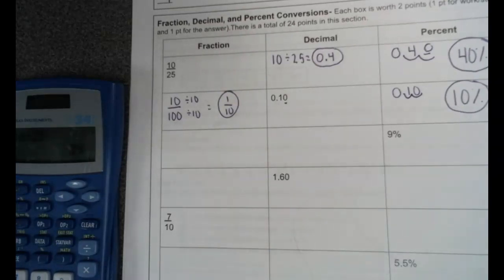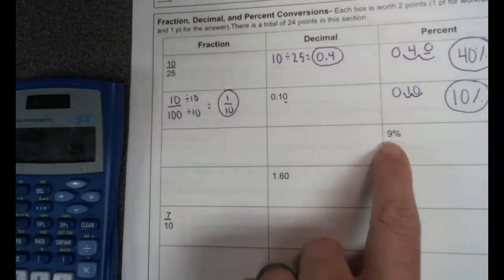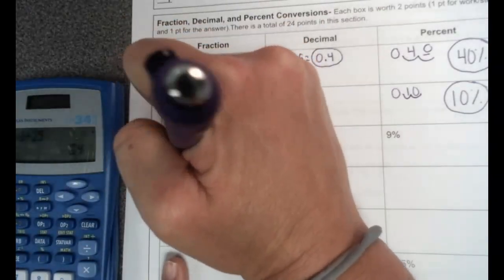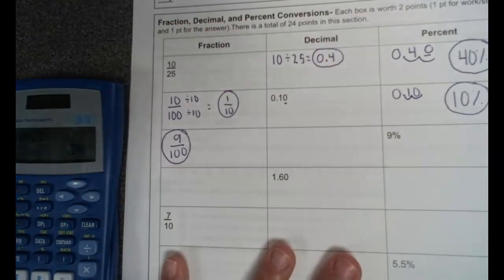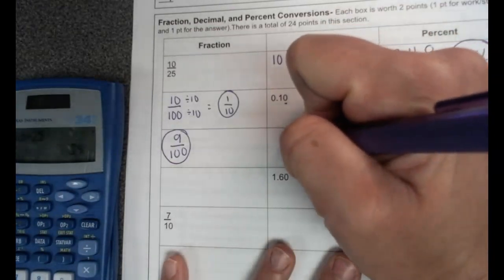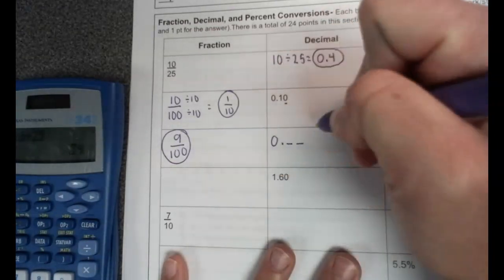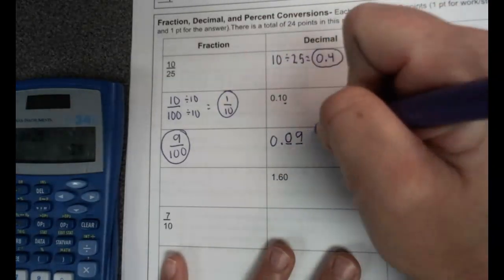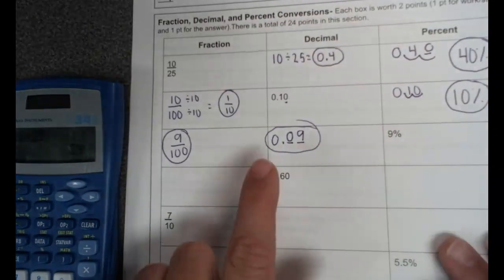On the next one, we have nine percent, and I'm going to write that as a fraction first. So a percent is out of 100, so we're going to write nine over 100. And that's your answer because you cannot simplify that. To write nine hundredths as a decimal, I need to put the nine in the hundredths place, so the nine goes in the hundredths place, and then a zero goes right in front of it. So that's your answer.